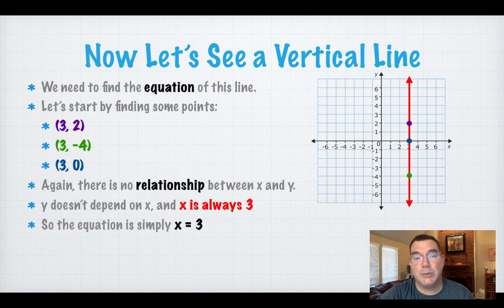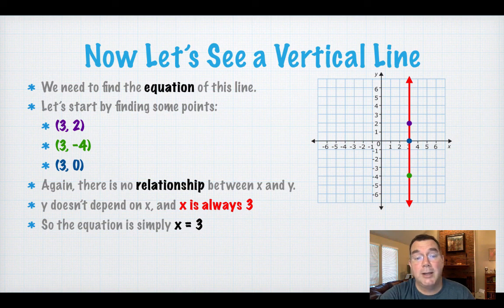So the equation is going to be x equals 3. And in this case, there's no mention of y because y doesn't matter. X is just going to be 3 and y can be whatever it wants to be.